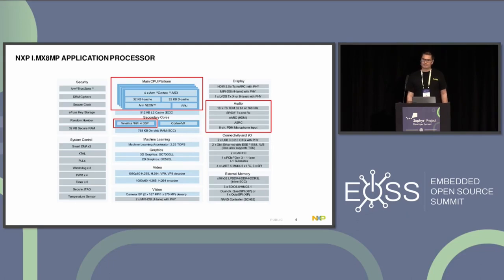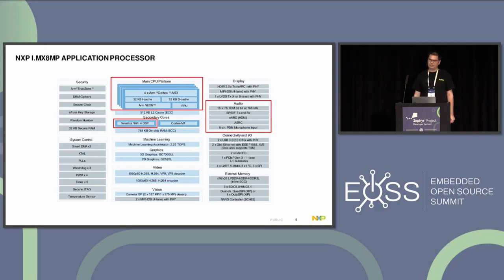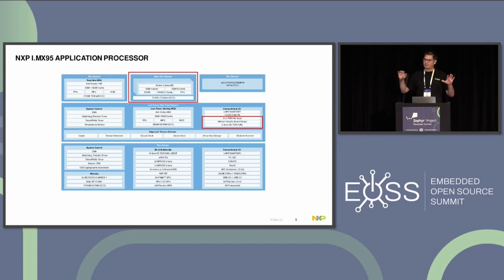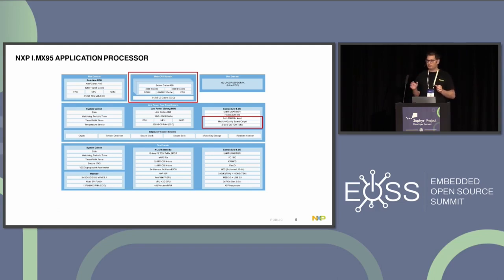Looking at the hardware and a bit of history with Sound Open Firmware: this is the i.MX M-Plus processor, which has a main CPU with several ARM cores and a HiFi 4 Tensilica DSP. We started with Sound Open Firmware based on Xtensa OS, which worked fine for this architecture, but didn't work for the next generation of audio where there is no DSP. The i.MX 95 application processor has up to six ARM cores but no DSP, so we needed a way to run the same solution on this new hardware. The switch from Xtensa OS to Zephyr helped, since Zephyr supports ARM64.